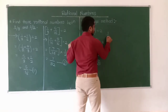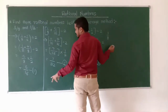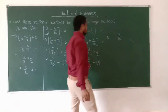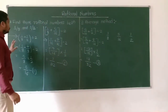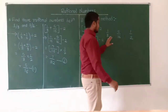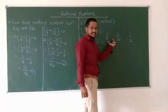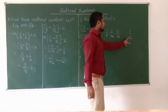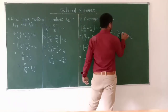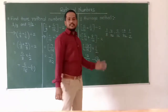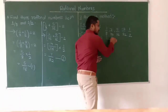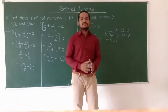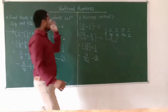Our original question was to find rational numbers between 1/8 and 1/2. The first rational number we got is 5/16, then by using 1/8 and 5/16 we got 7/32, and by using 5/16 and 1/2 we got 13/32. By using these pairs you can find even more rational numbers, and so on. You can find any number of rational numbers by using the average method.